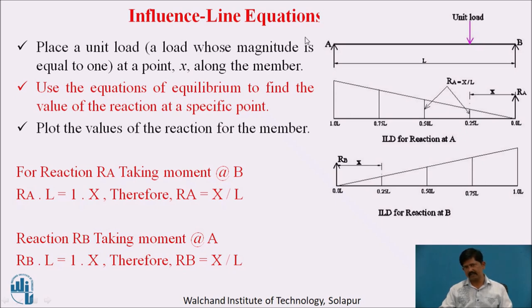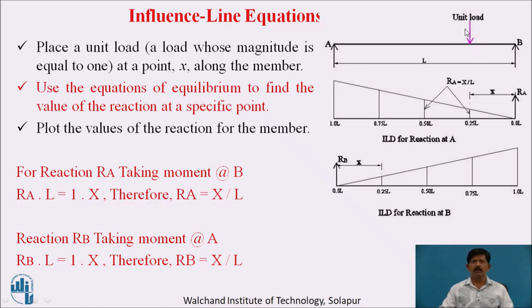Using the influence line equation: an equilibrium equation is developed and values of the function are taken at specified intervals and plotted. For reaction RA, I consider the distance X from B and take the moment about B. Taking moment about B with the unit load at distance X from B gives RA × L = 1 × X, therefore RA = X/L. Taking intervals of 0.25L, I calculate RA, plot the points, and connect them to give the ILD for RA.